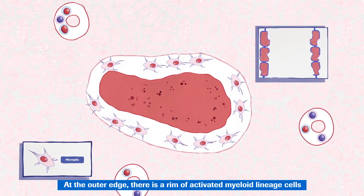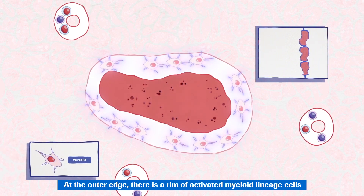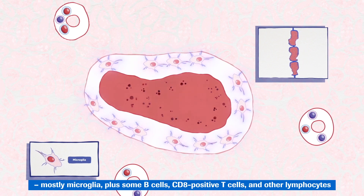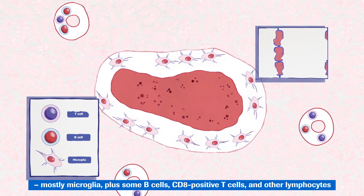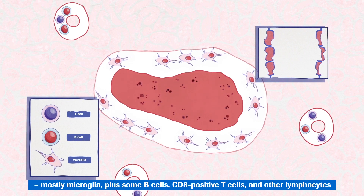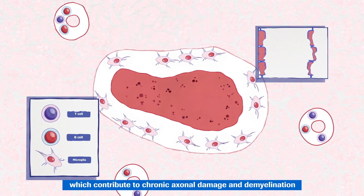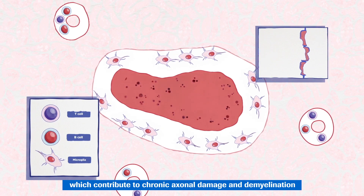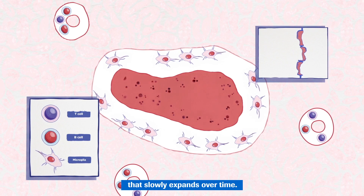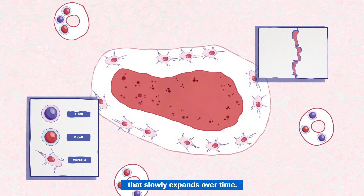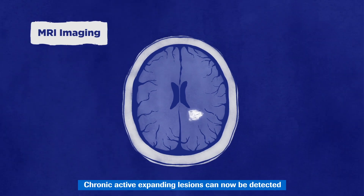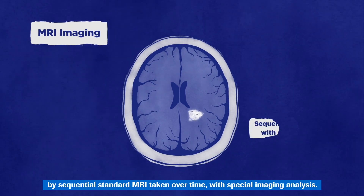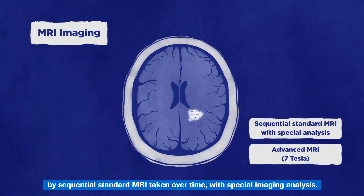At the outer edge, there is a rim of activated myeloid lineage cells, mostly microglia, plus some B cells, CD8-positive T cells and other lymphocytes, which contribute to chronic axonal damage and demyelination that slowly expands over time. Chronic active expanding lesions can now be detected by sequential standard MRI taken over time with special imaging analysis.